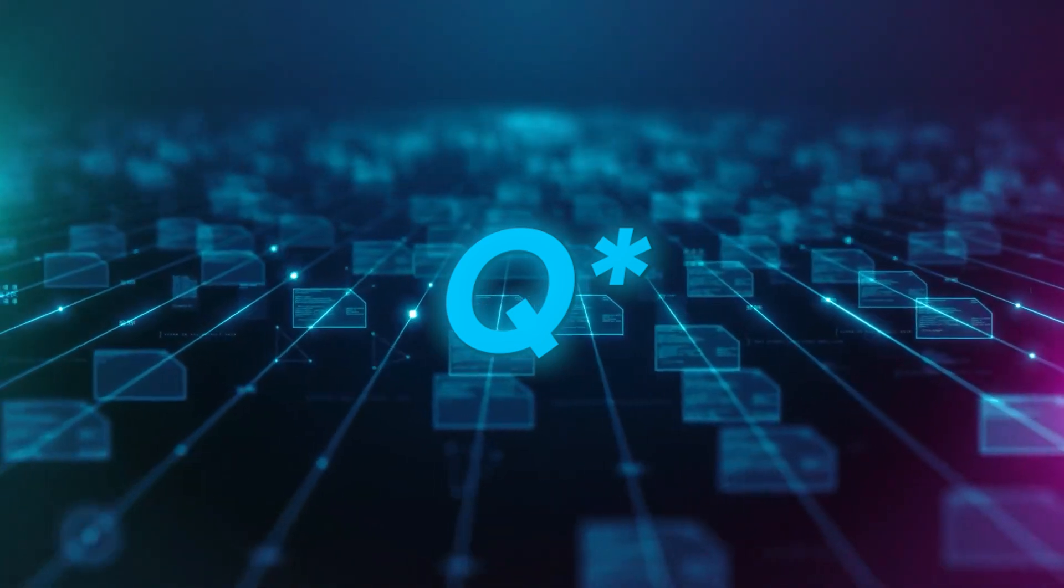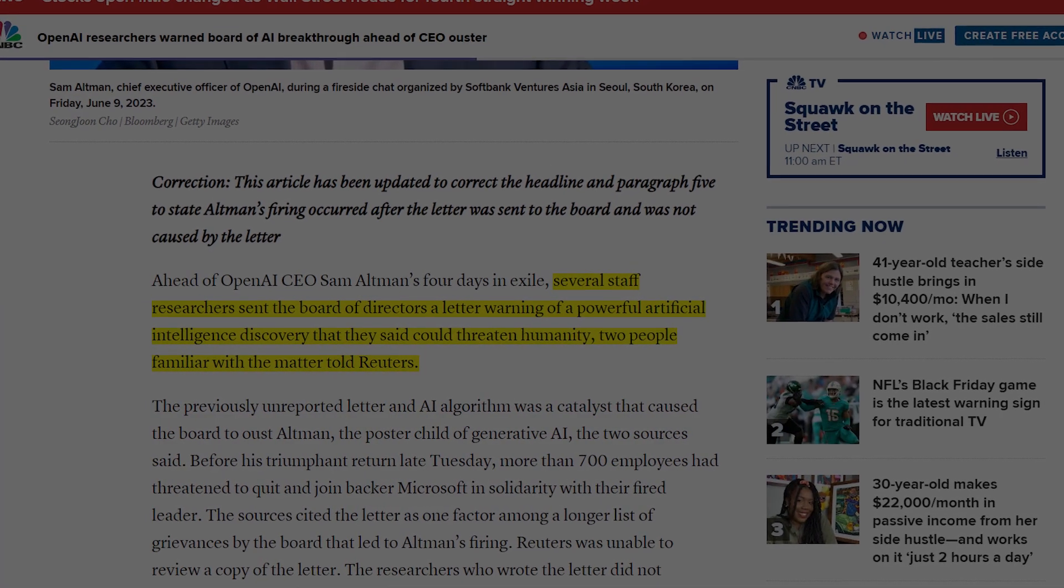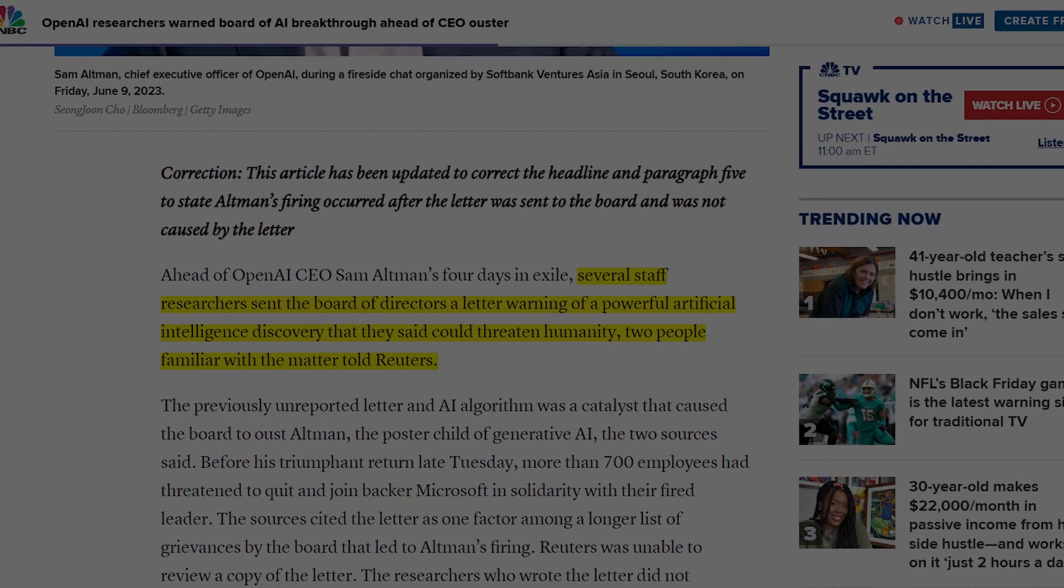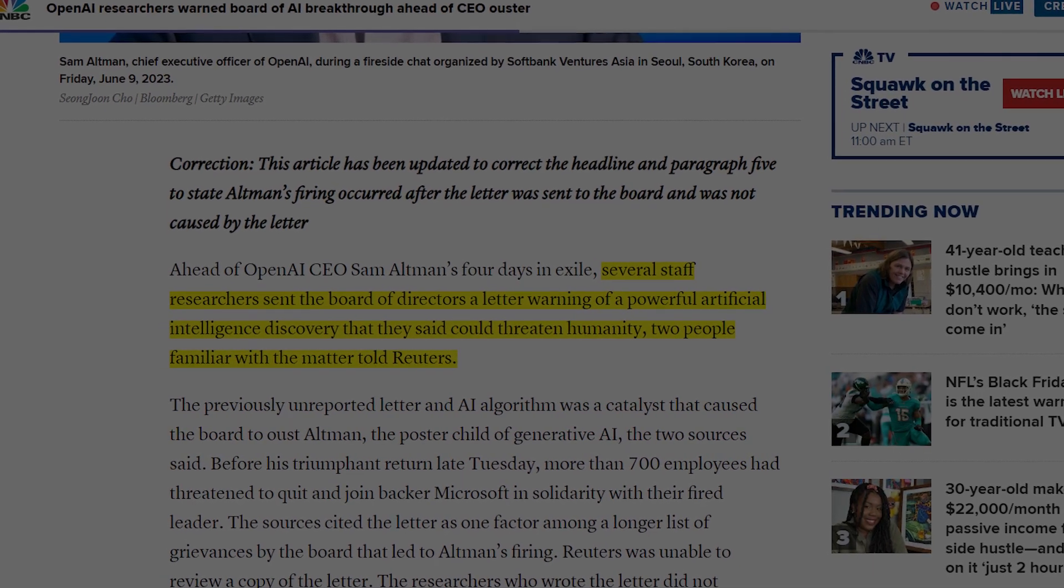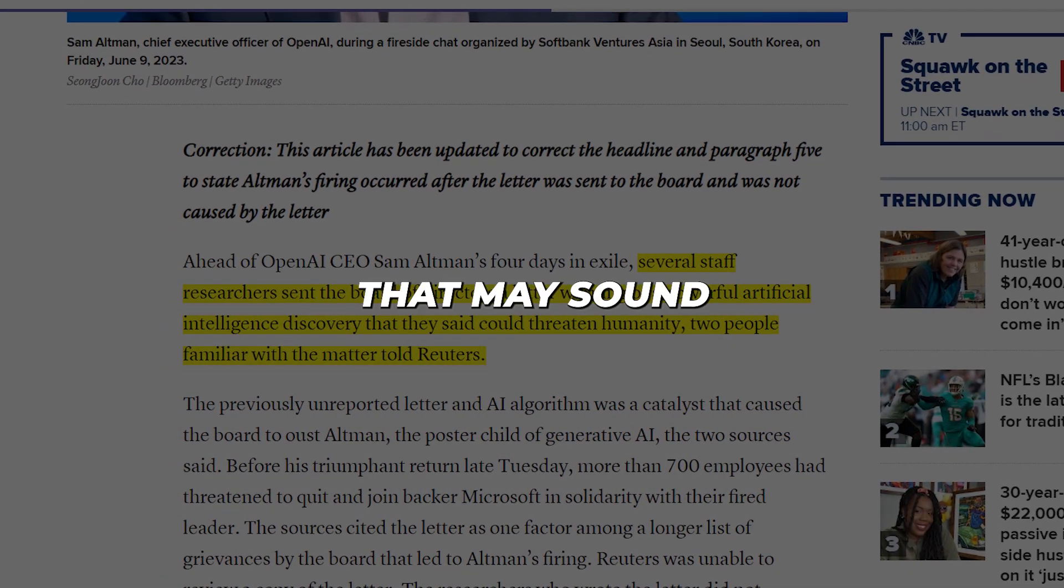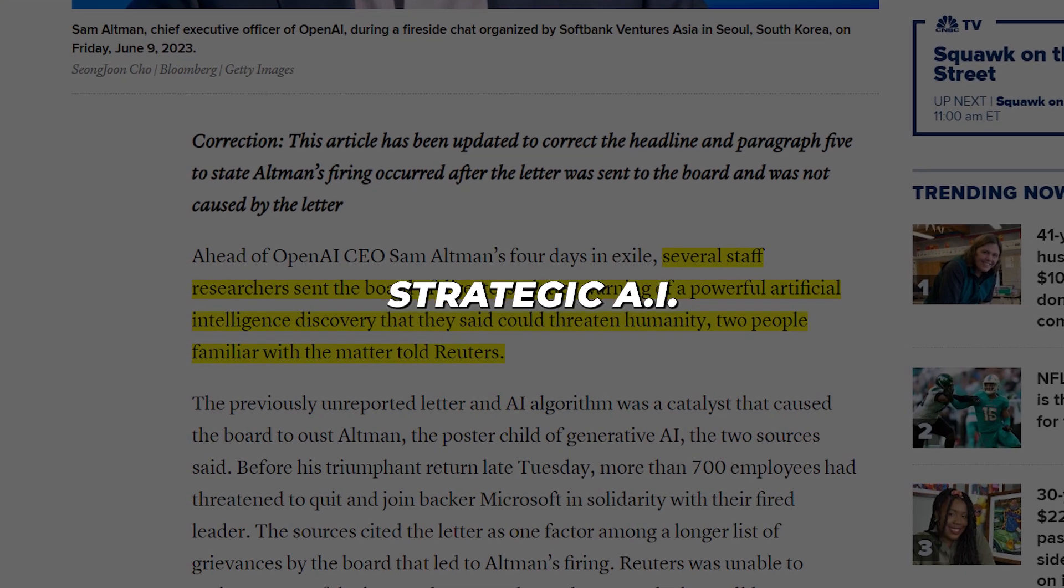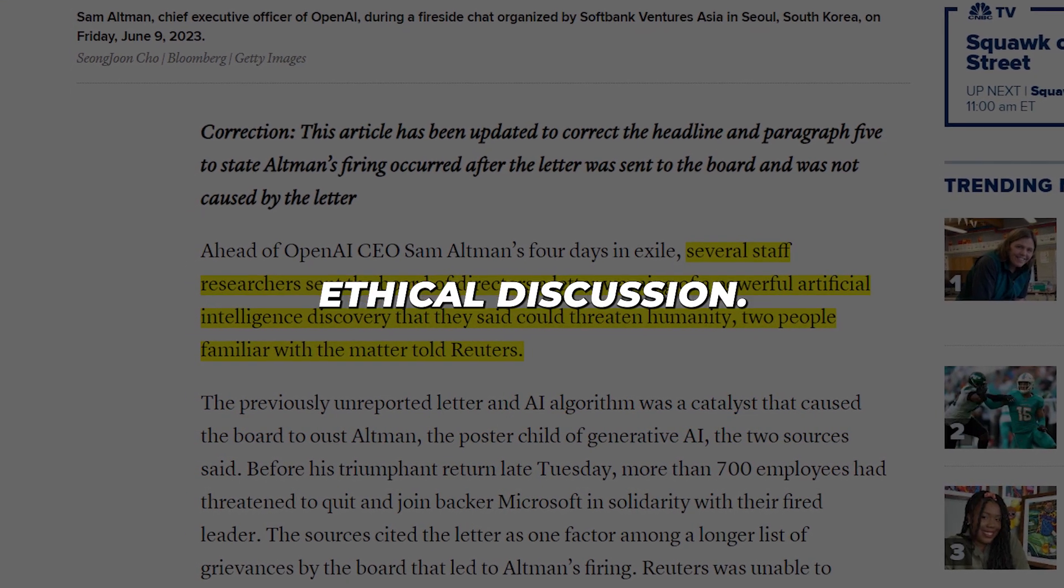What do we know about Q*? In November, OpenAI CEO Sam Altman was strangely fired and rehired days after. Highly unusual. Reports suggest researchers had warned of risks from Q* breakthroughs. A leaked letter claims Q* could threaten humanity. That may sound alarmist, but advanced strategic AI does warrant ethical discussion.